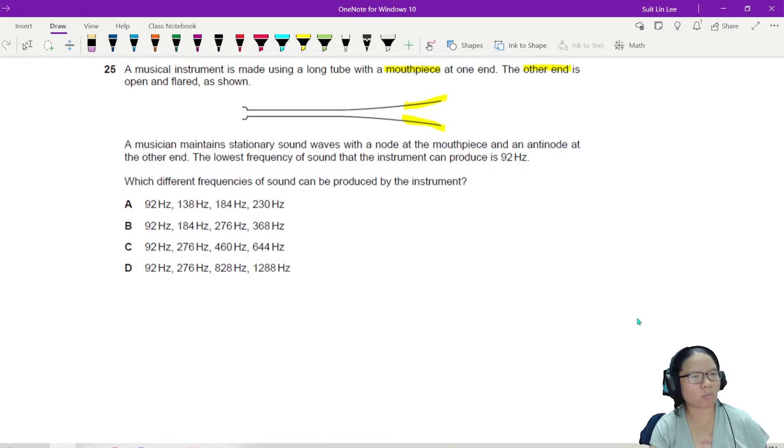This one is like a trombone, or a vuvuzela, you know, the very noisy one. Anyway, a musician maintains stationary sound wave with a note - important information - a note at the mouthpiece. We'll draw a big N here. And an antinode at the other end. We'll draw a big A here.